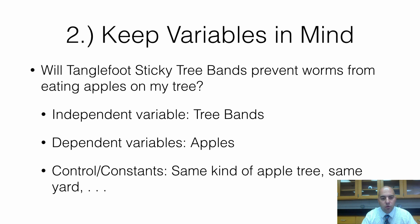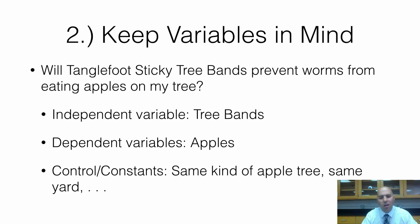Just as a review, some of the control or constant variables: we want to make sure we're talking about the same kind of apple tree, since maybe different kinds have this problem and others don't. We want to make sure the trees are in the same yard with the same sunlight. We want everything to stay the same except for the tree bands.